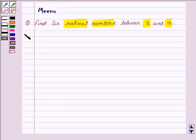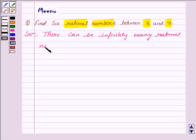Let's now solve the question. We know that there are infinitely many rational numbers between any 2 real numbers. So, there can be infinitely many rational numbers between 3 and 4.